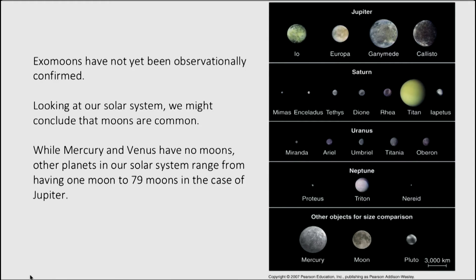We have no example yet of an exomoon — a moon around an extrasolar planet — because exomoons are so small and so low mass that instrumental techniques are not sufficiently sensitive to allow their detection. But we can speculate that, as planets are a natural byproduct of star formation and moons are a natural byproduct of planet formation, in the extrasolar systems we've found there will be exomoons. We just don't know how to find them yet, and several searches are underway. Looking at our solar system, we might conclude that moons are common — Mercury and Venus have no moons, but the other planets do: one large moon for Earth, two small moons for Mars, and dozens of moons for the giant planets.